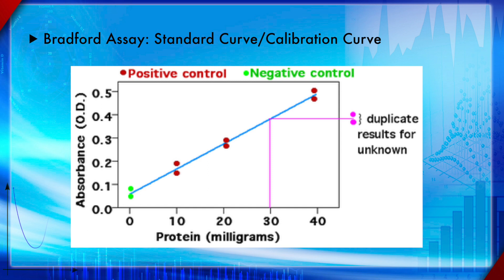The equation can predict the Y value given X, or vice versa. Once you have the calibration curve, you can predict unknowns — for example, measuring the OD of a plasma sample from an unknown patient and reading the corresponding protein concentration off the standard curve. Any OD value can be converted to a protein amount by plugging it into the equation.